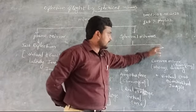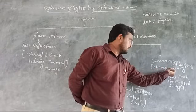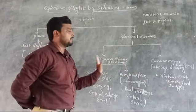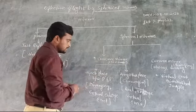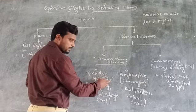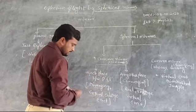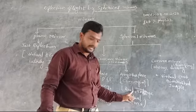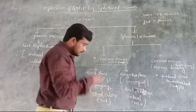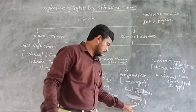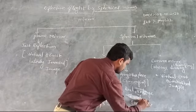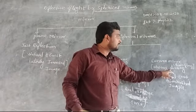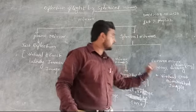Next, the convex mirror — the convex mirror is always a diverging mirror at any object position. It always produces a virtual, erect, and diminished image. For the convex mirror, whether the object is placed at the pole or any other position, it always diverges rays and forms a virtual image. For any other position, the image formed is real, enlarged, and inverted. This is the difference between concave and convex mirrors.